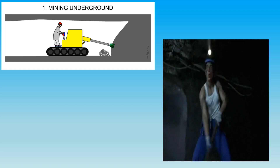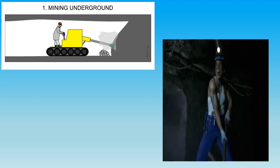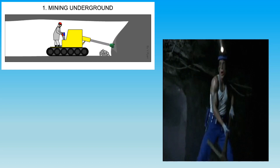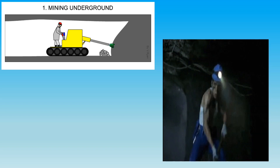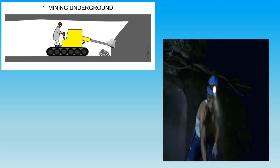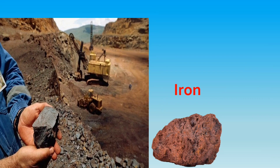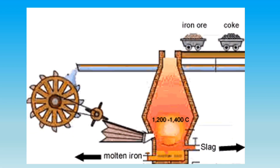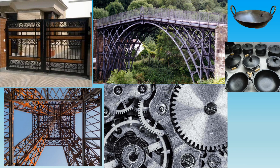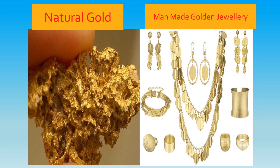Have you ever heard of iron? Iron is a metal used to make many things. We cannot make iron — it occurs naturally. We dig it from the earth and process it carefully to make different things. We build houses, buildings, machines, and many other things from iron.